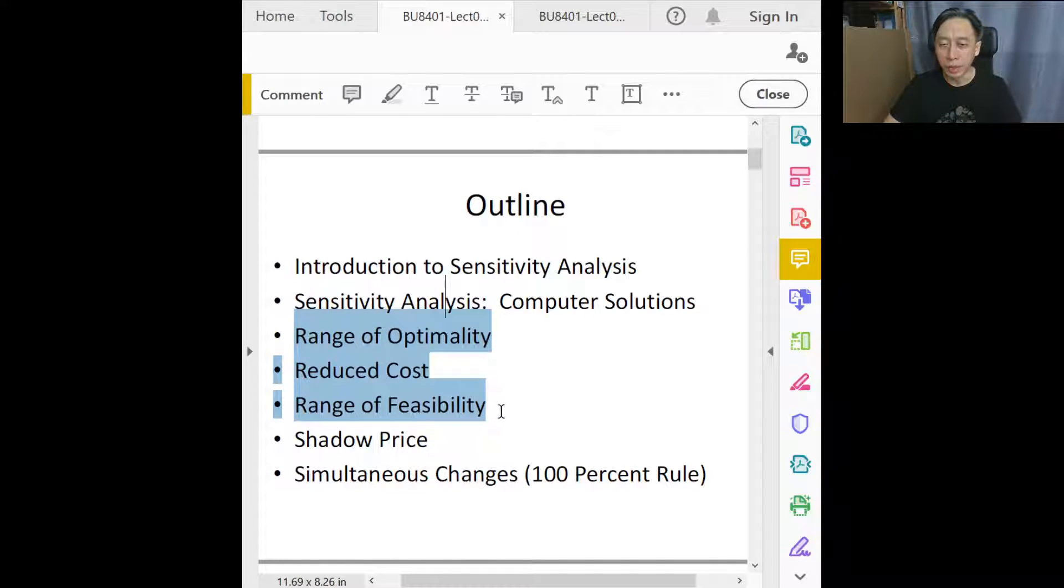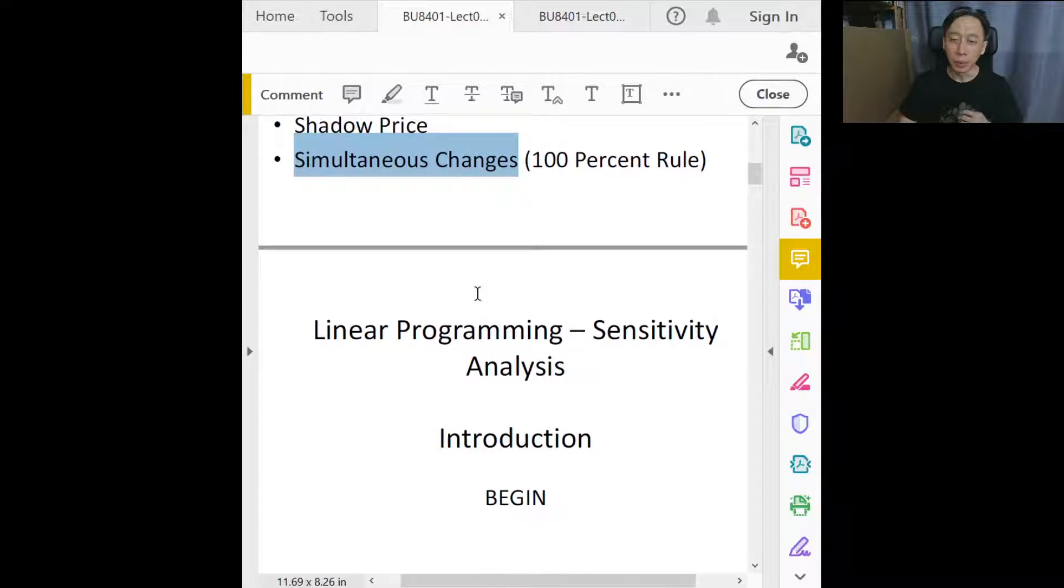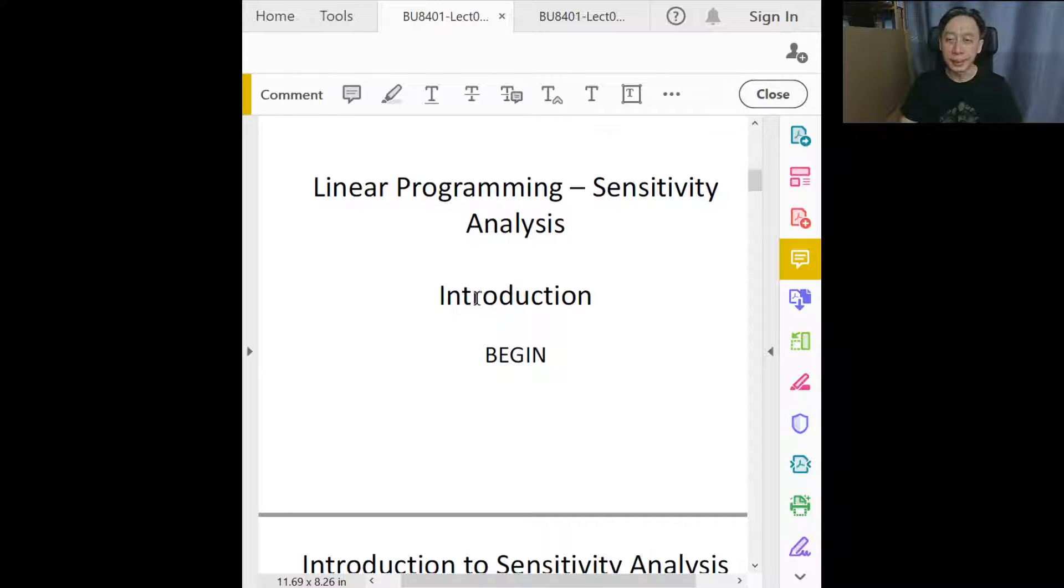Primarily we'll be talking about the range of optimality, the range of feasibility, and how to interpret reduced cost and shadow price from the outcomes of sensitivity report as generated by Excel. We'll also discuss the case when multiple input disturbances are made simultaneously and what the result of disturbing the LP model system in that fashion will be.